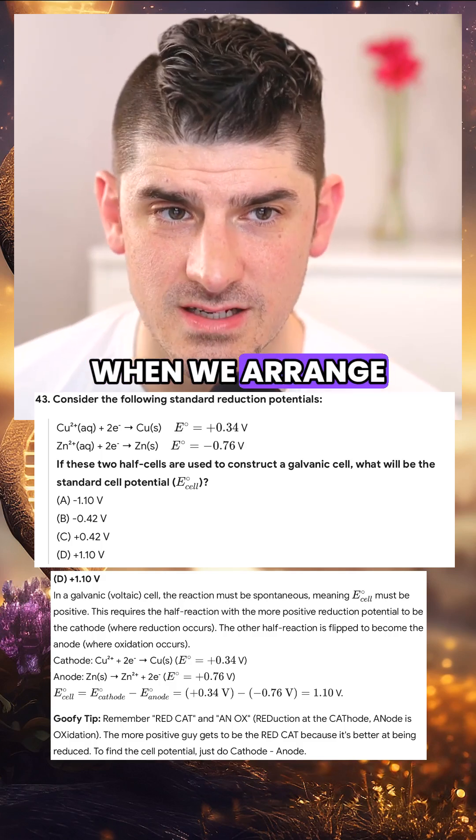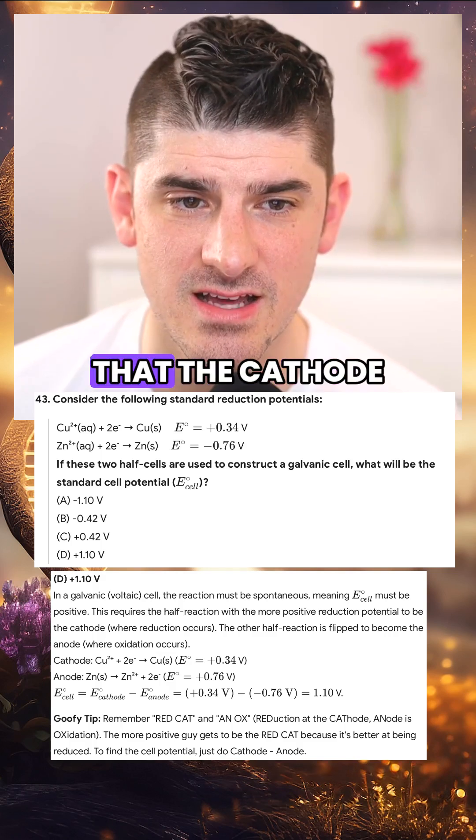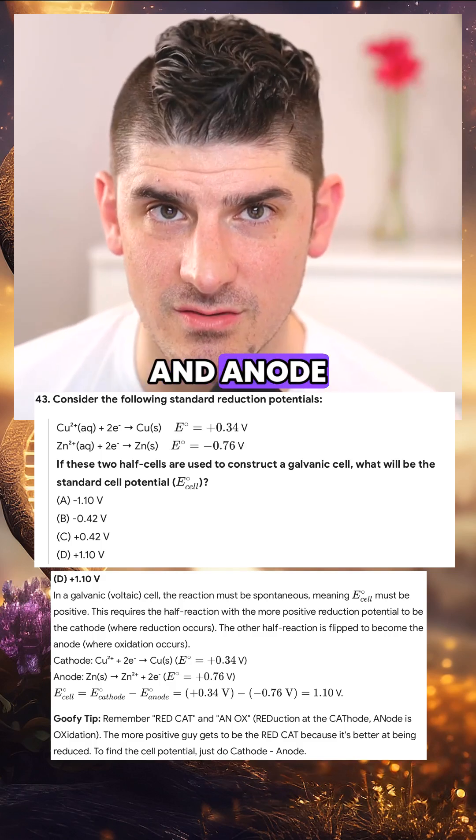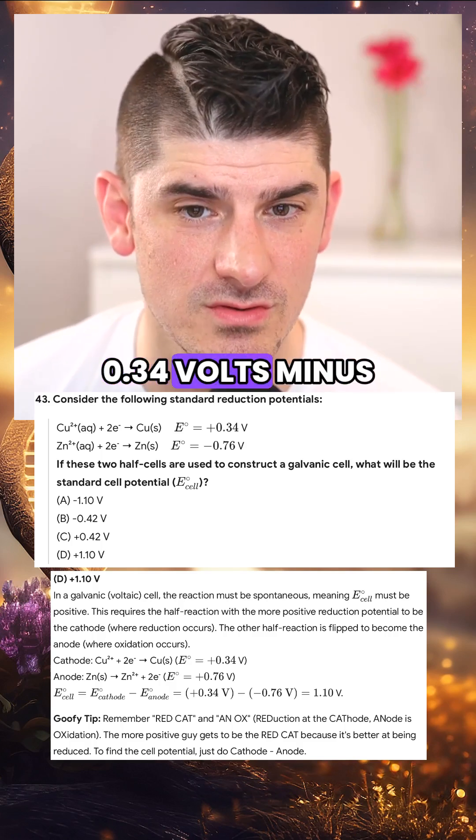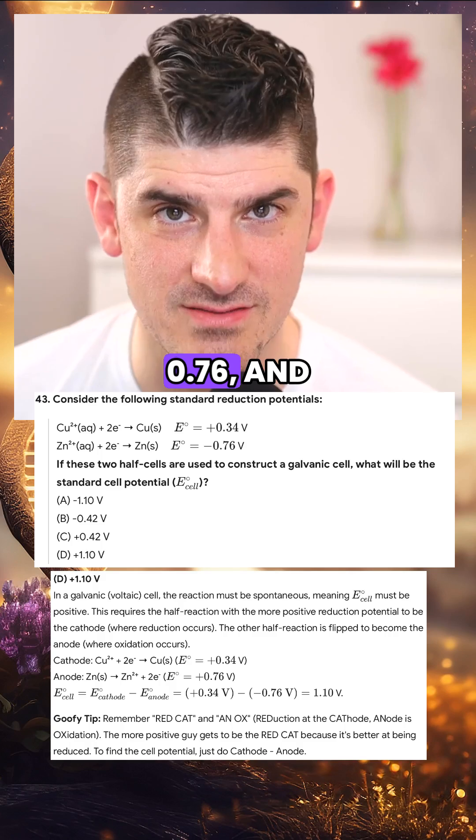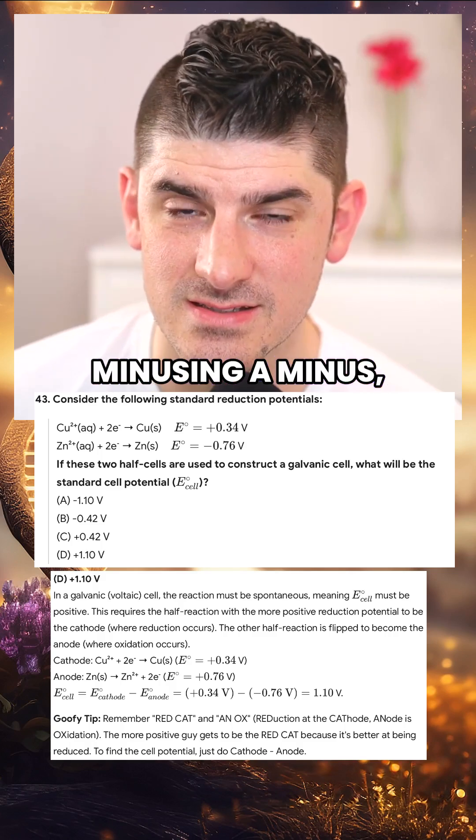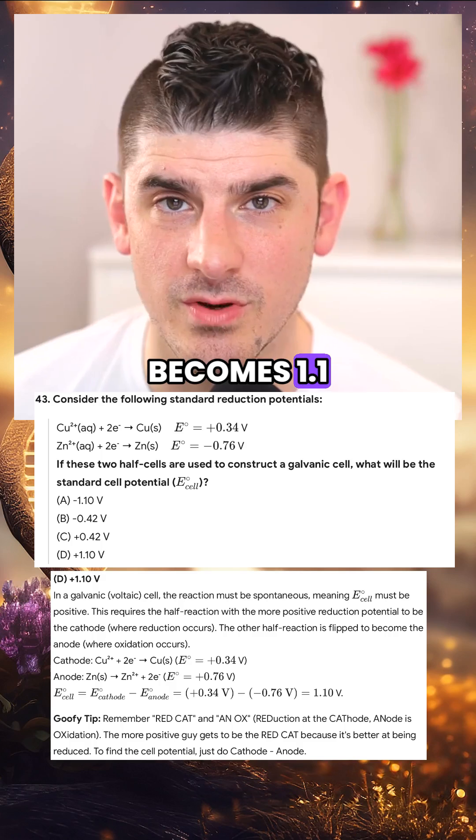When we arrange it in a balanced reaction such that the cathode and anode difference are taken, we get 0.34 volts minus the anode, which is a negative 0.76, and minusing a minus, subtracting a minus makes it a positive. And so the total becomes 1.1 volts.